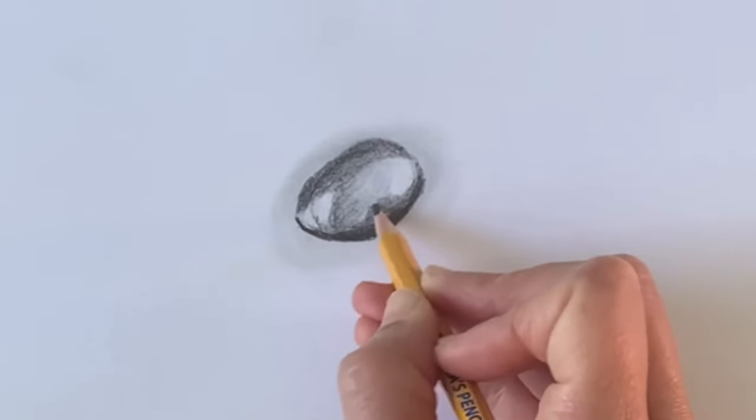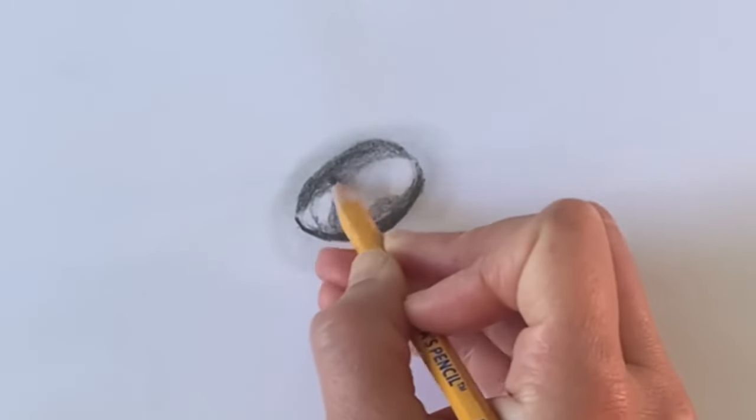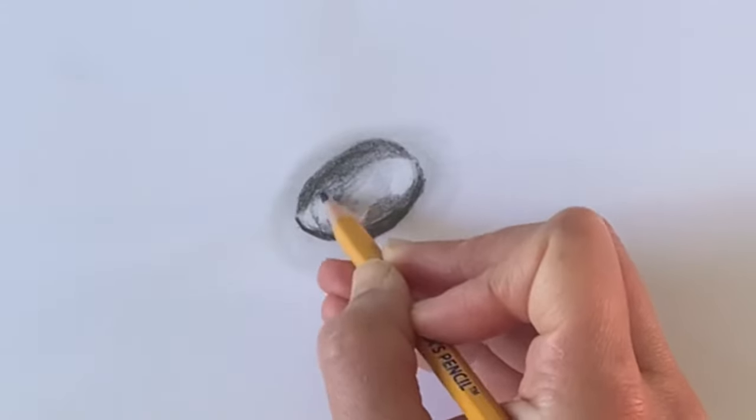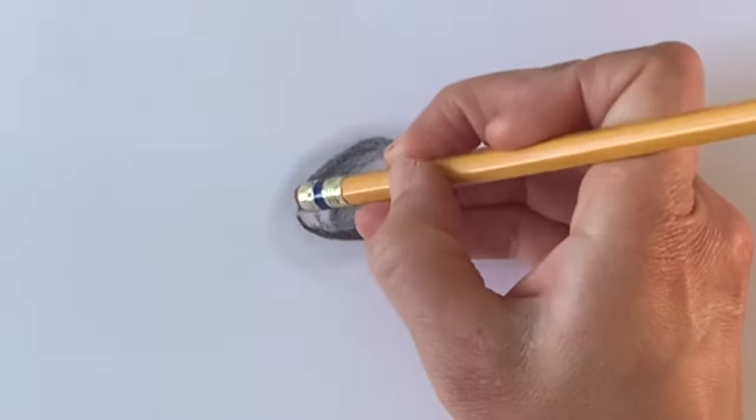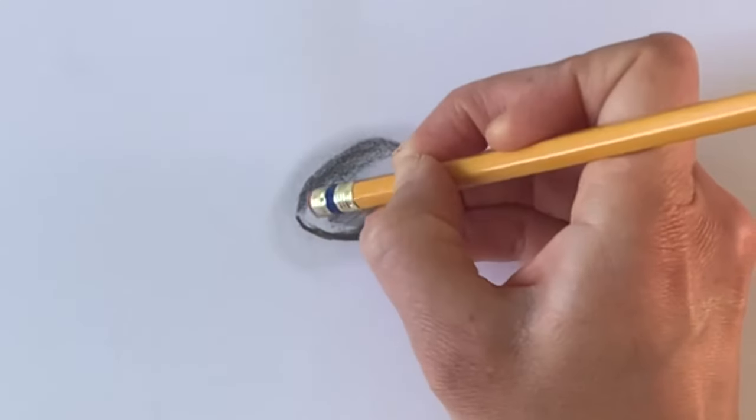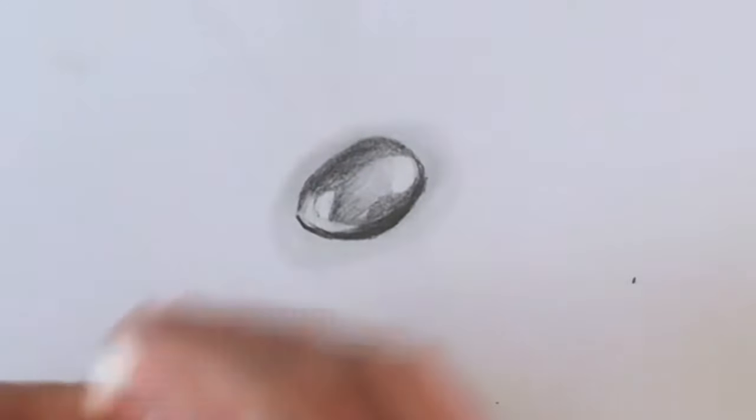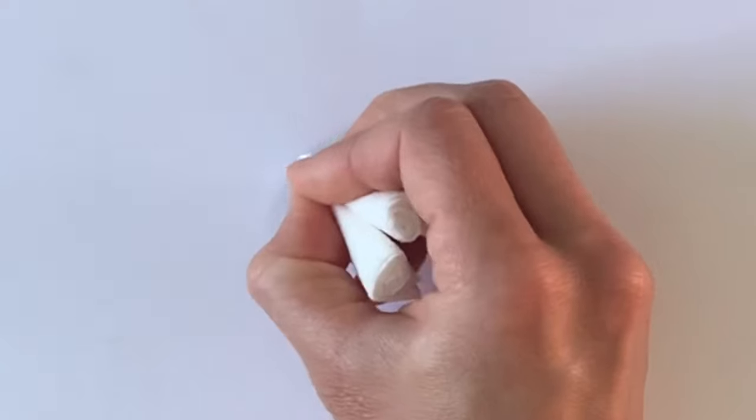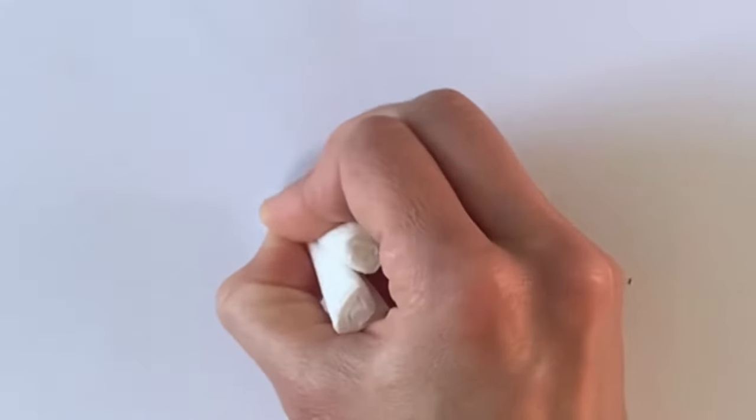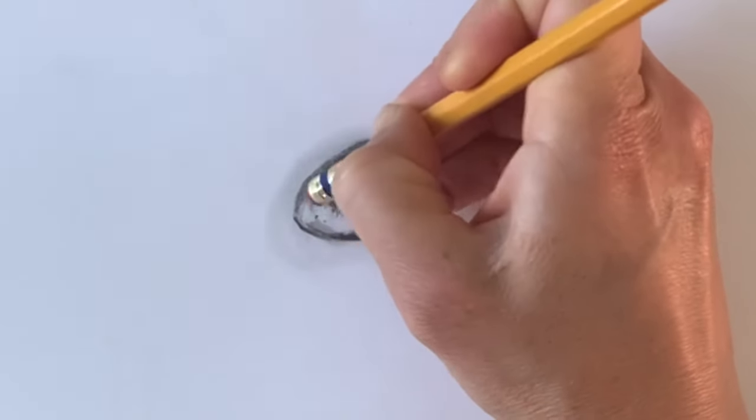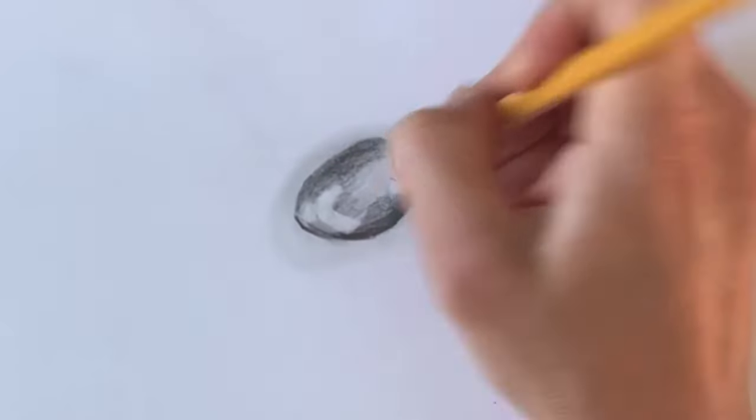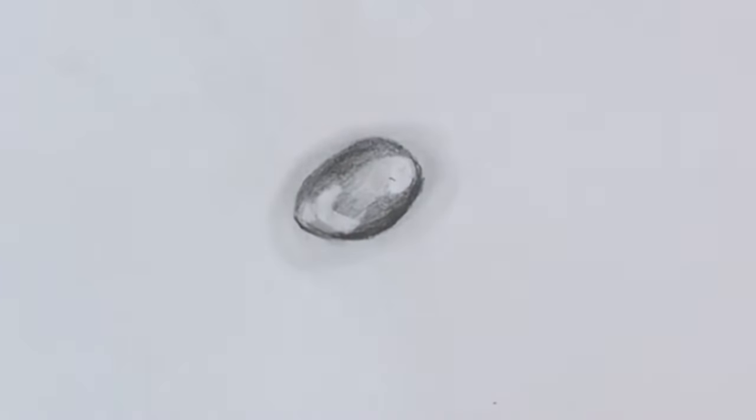Then my homemade blendy stick—which by the way is just toilet paper—to kind of soften and make those transitions flow together. With my tissue, I'm going to go around the highlights to soften, so it's not just like a block of white. Then I'll go back in and in the center part erase. You'll see me do this a couple times.